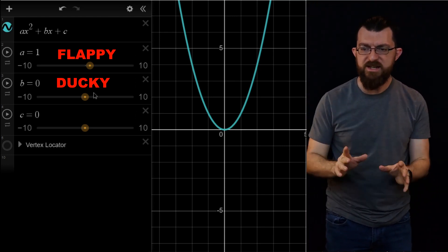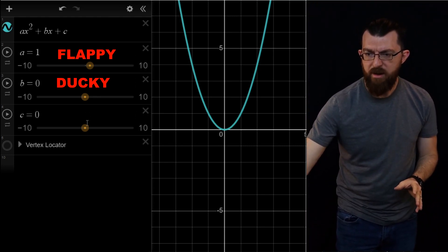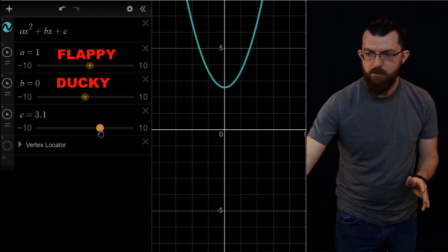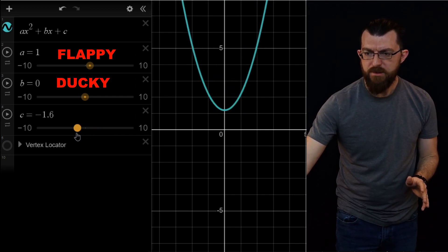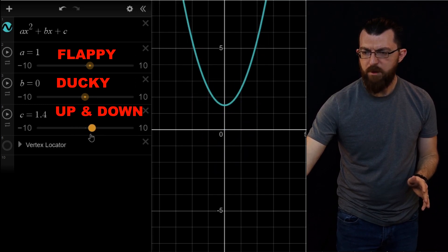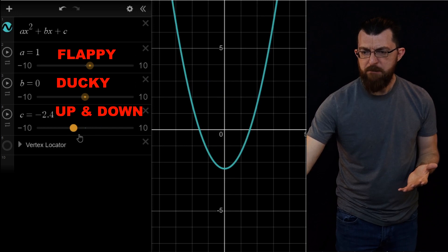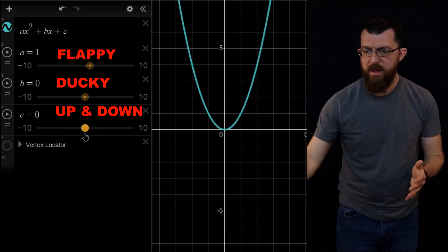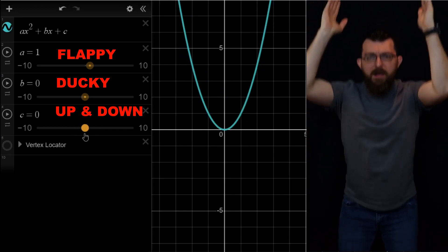The last one is c. That one doesn't have any x on it. It's just out there by itself. And so it's not moving it left or right. It's only moving it up and down. This is the vertical slider. It's just moving it vertically up and down.